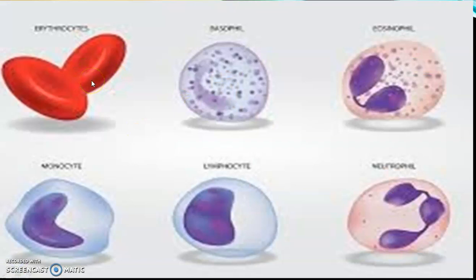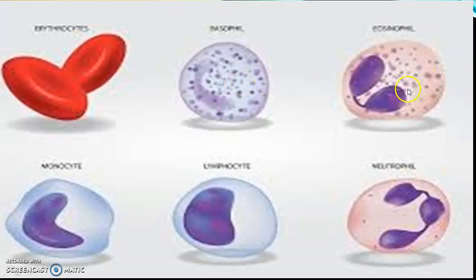Erythrocytes are biconcave in shape. Among WBCs, eosinophils have two nuclear lobes, basophils and neutrophils have three lobes. Eosinophils, basophils, and neutrophils contain granules and are called granulocytes. Monocytes have a kidney-shaped nuclear lobe and lymphocytes have a large nucleus; both lack granules and are called agranulocytes. These are the five types of WBCs.